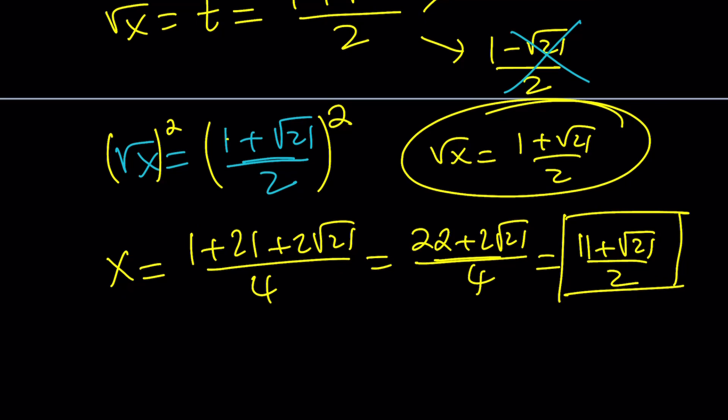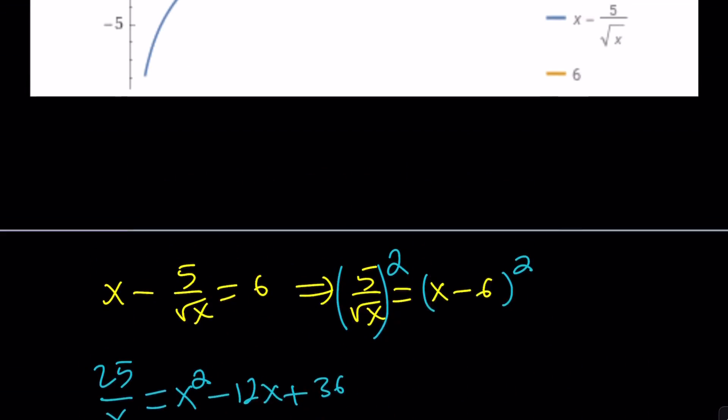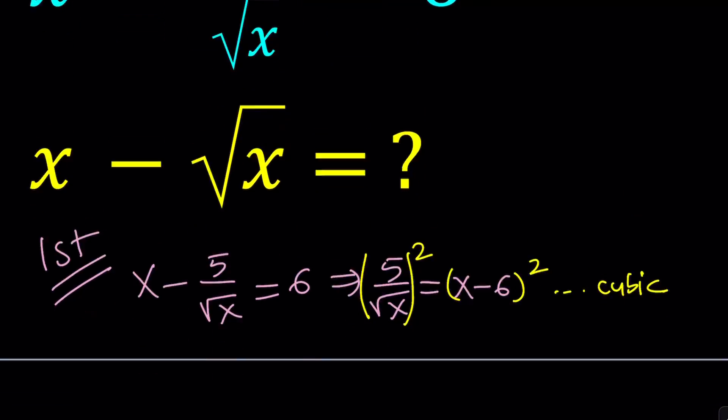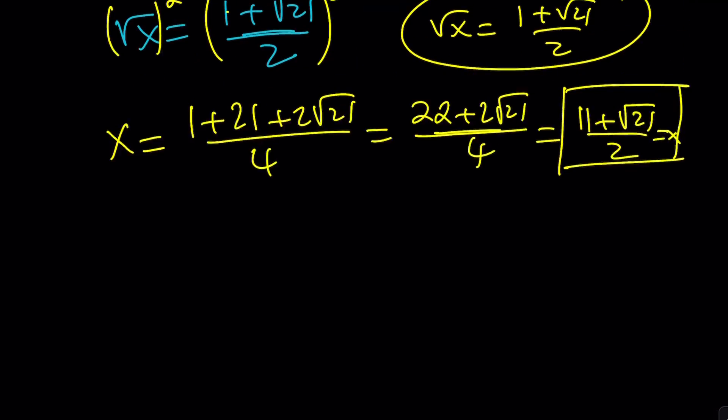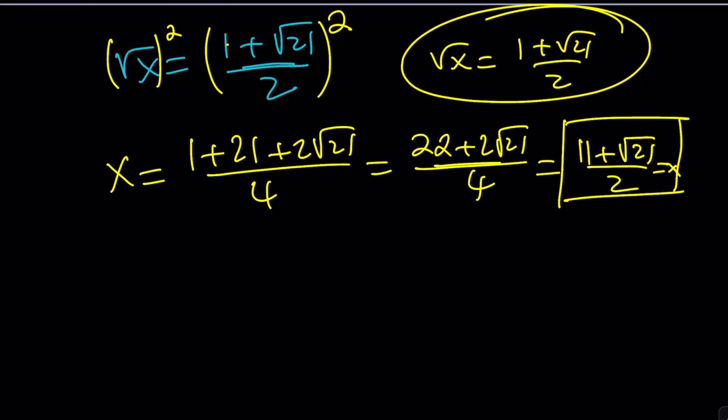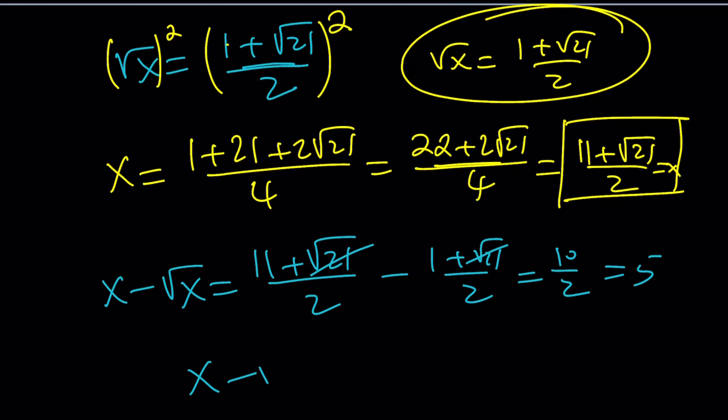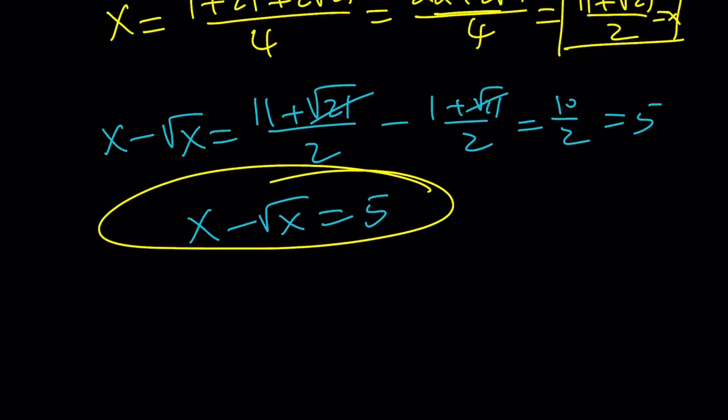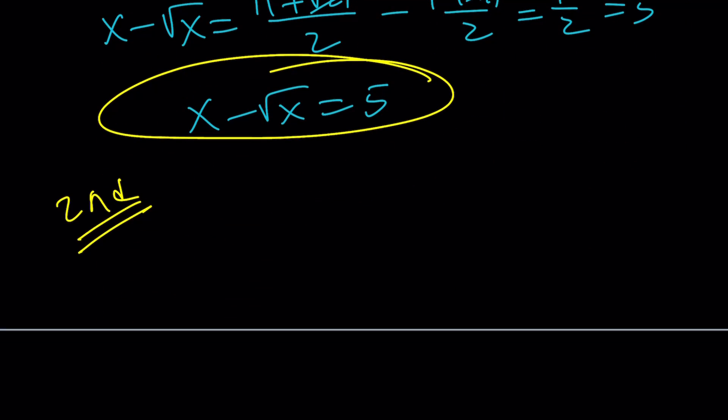So now I got x and square root of x. What am I supposed to do? I'm supposed to evaluate x minus square root of x. So let's go ahead and evaluate it. In other words, plug everything in. What is x? 11 plus square root of 21 over 2. And square root of x is 1 plus square root of 21 over 2. Square root of 21 cancels out. 11 minus 1 is 10. 10 over 2 is 5. So the answer is 5. So simple. Even though x is not that simple, we got a really nice value. Let's go ahead and check out the second method.